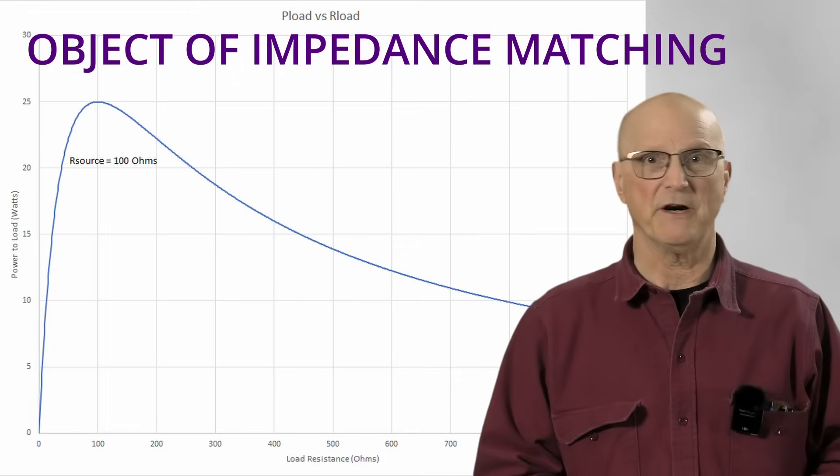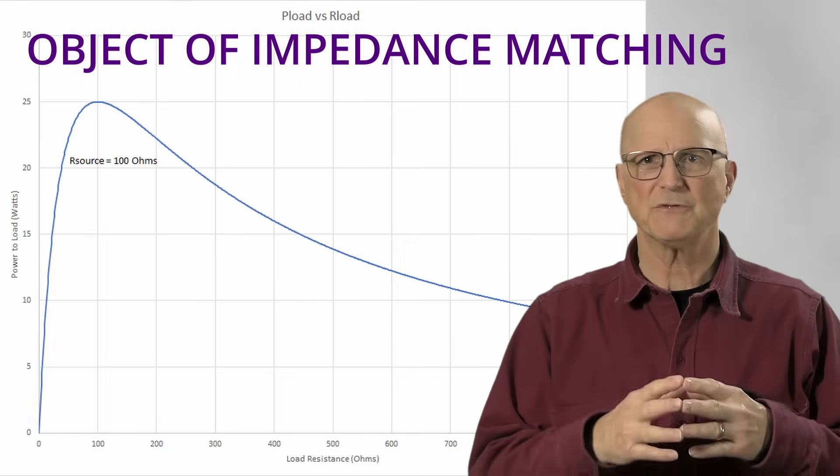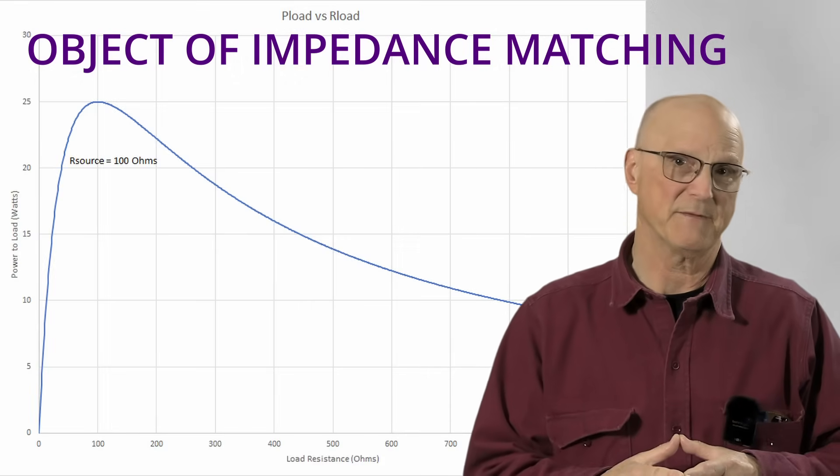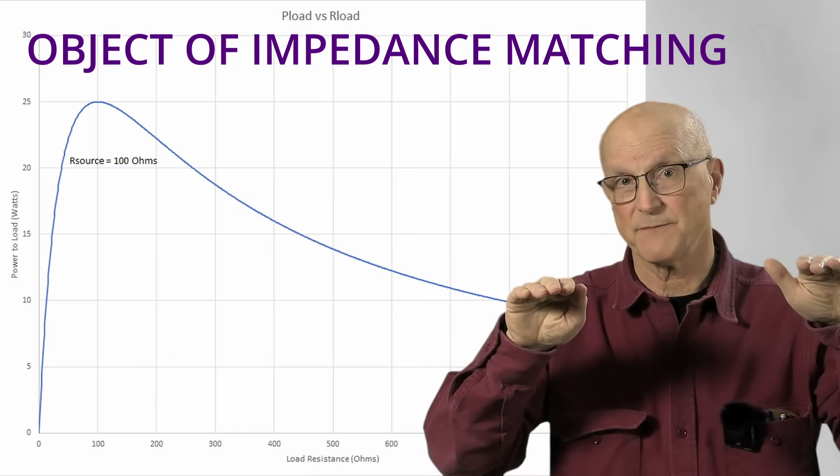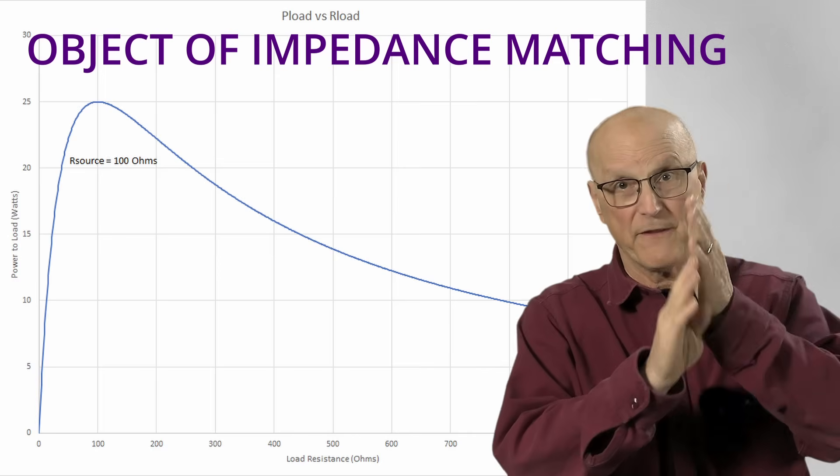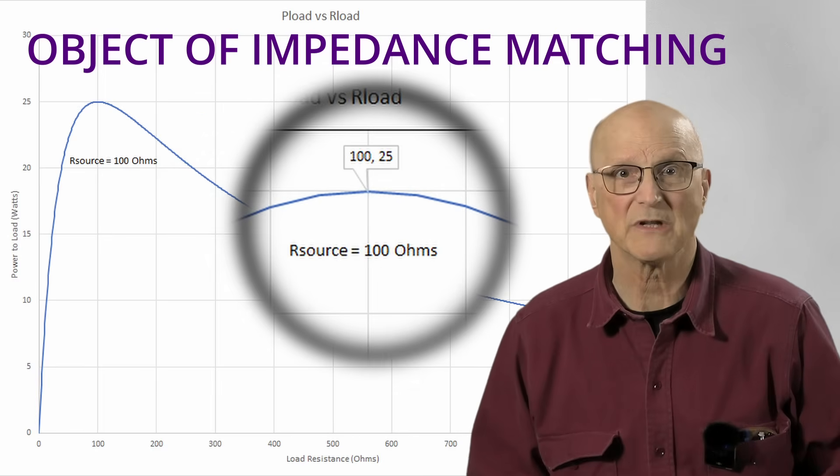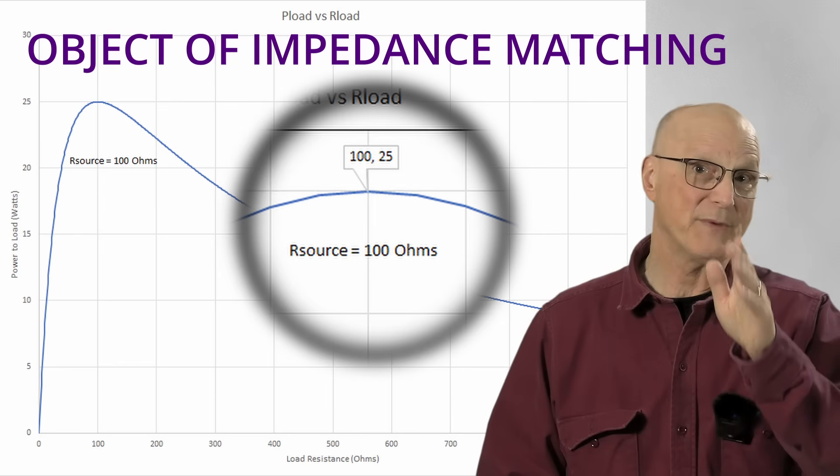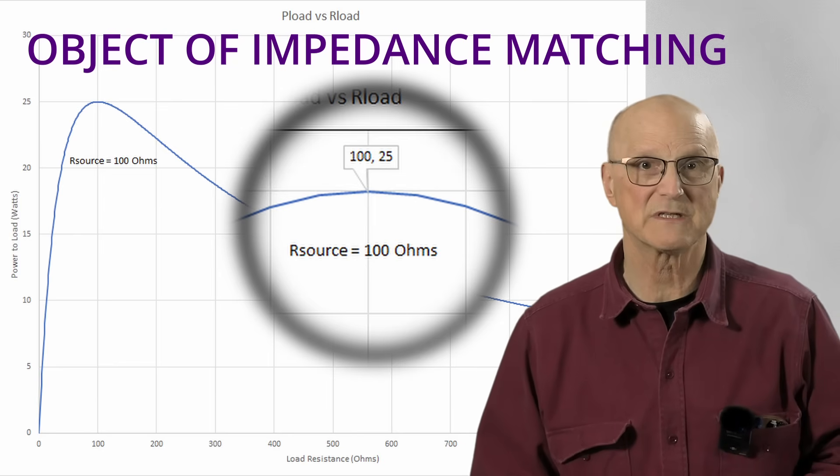So if you look at this chart, I have a fixed source resistance and I'm changing the load resistance. The load resistance is plotted on the horizontal axis and the power delivered to the load is on the vertical axis. Notice that the power delivered to the load has its peak when the load resistance is equal to the source resistance.